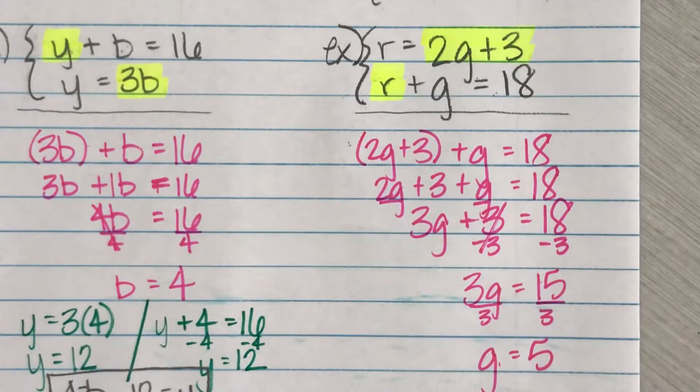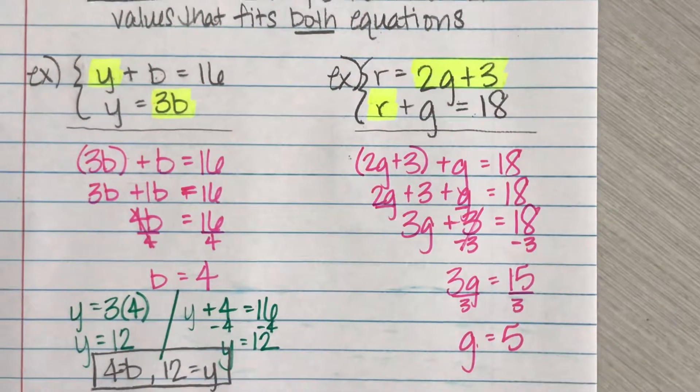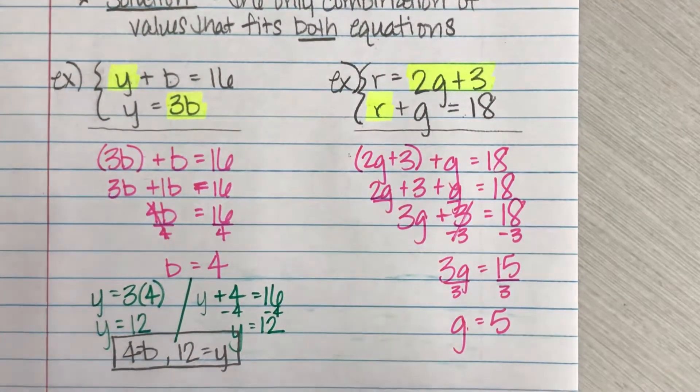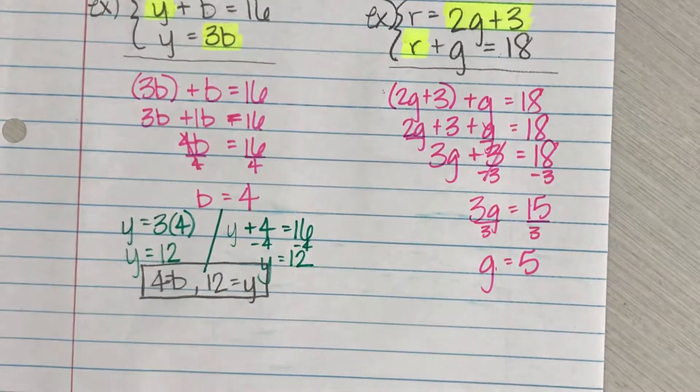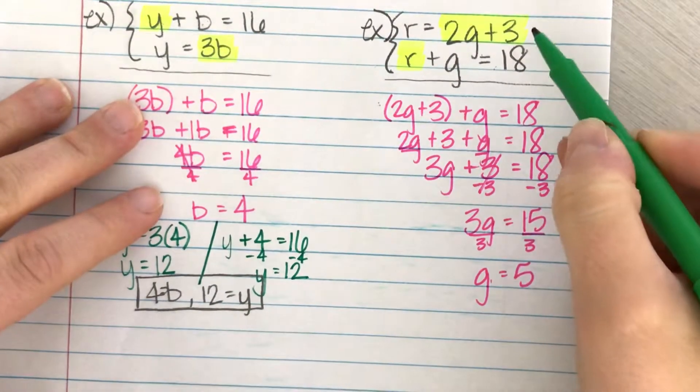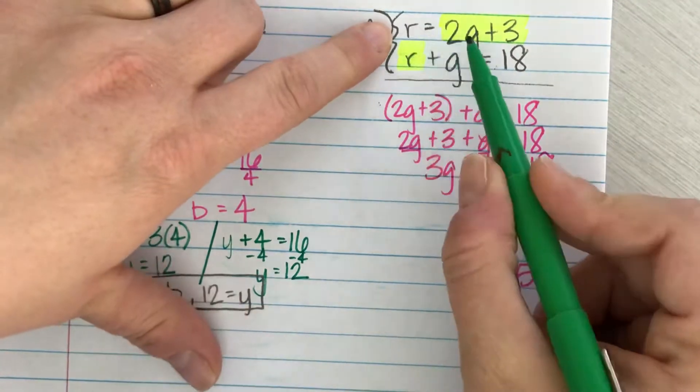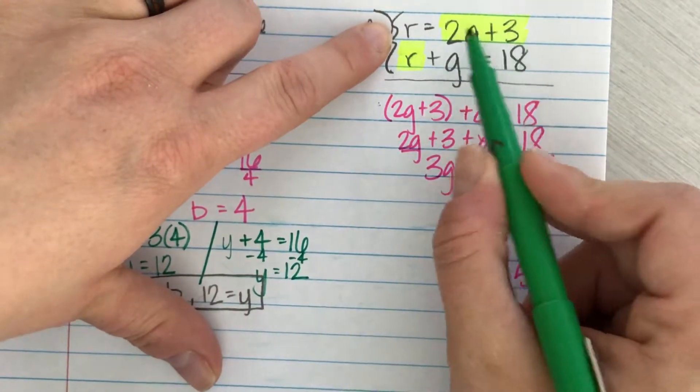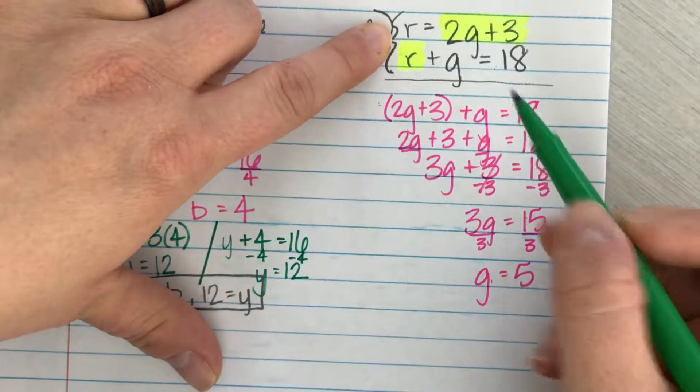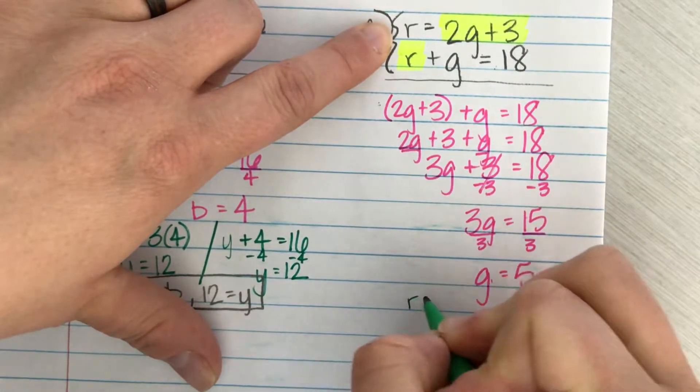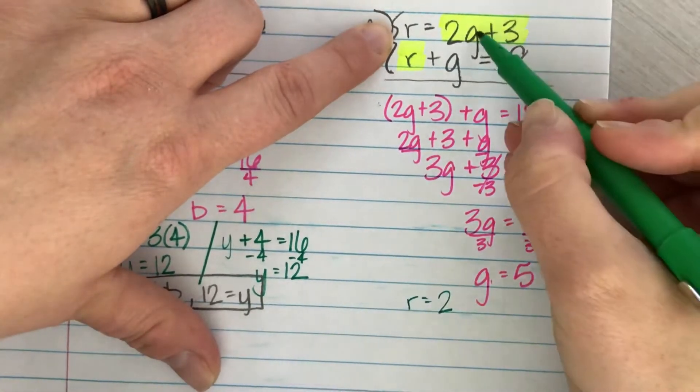Cool. I'm halfway there. I now know that g has to equal five. So now let's think about how I can use this information. I can use either one of these equations, whichever one looks easier to me. For me personally, I like this one because if I plug in, I'm not going to have to do any solving. It's just going to tell me what r is. So I'm going to say r has to be two times g, which I now know is five.